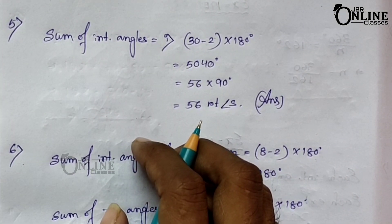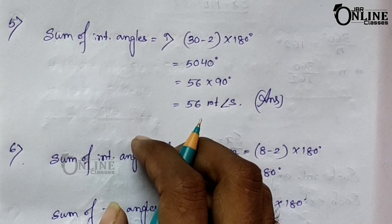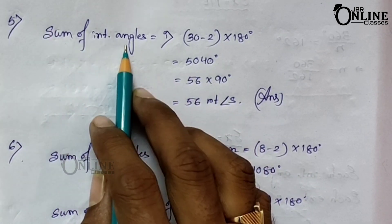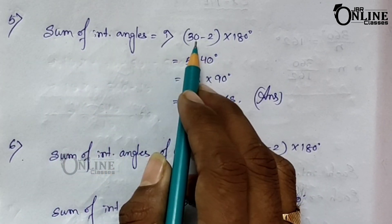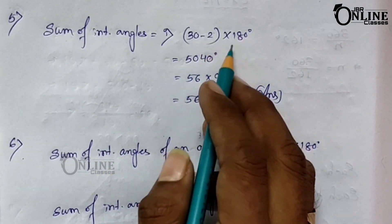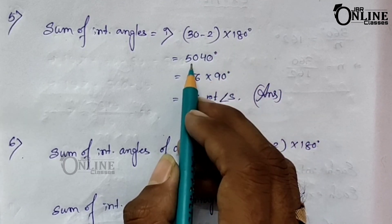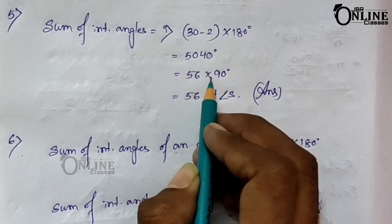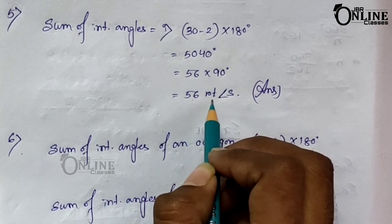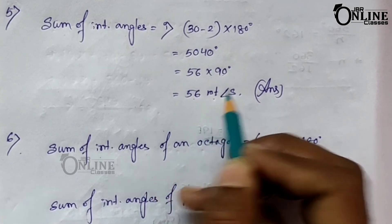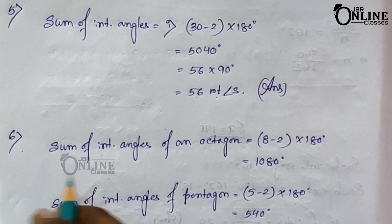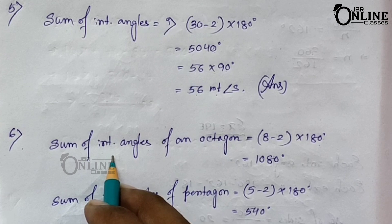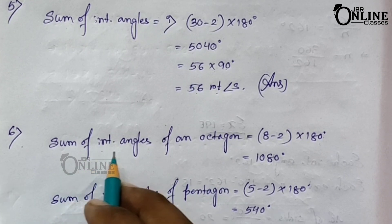Problem number five: find the sum of the interior angles of a polygon which has 30 sides. Sum of interior angles = (n − 2) × 180° = (30 − 2) × 180° = 5040°. That equals 56 right angles.